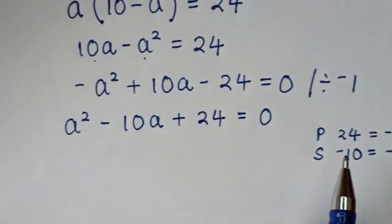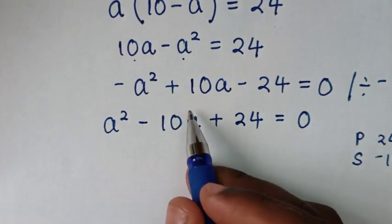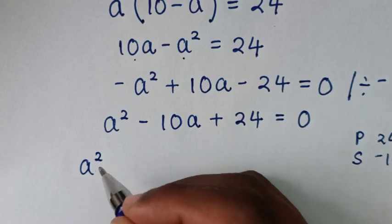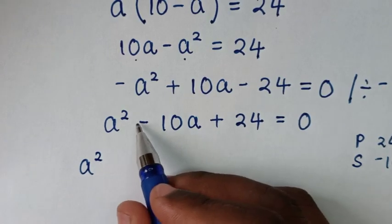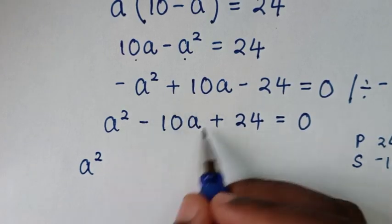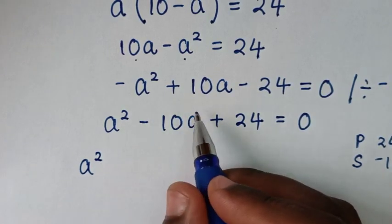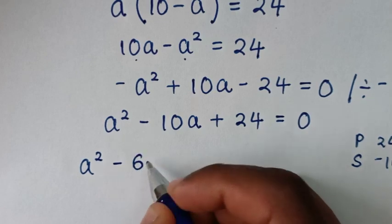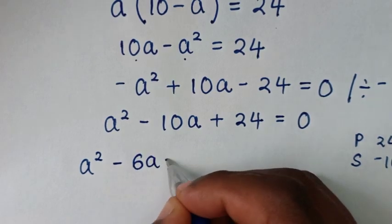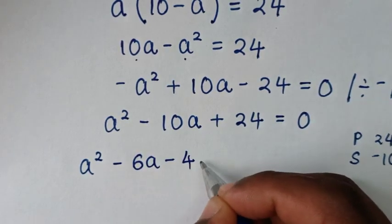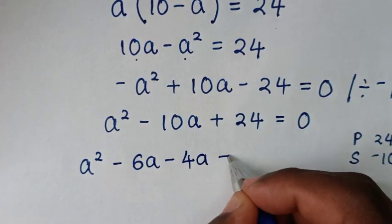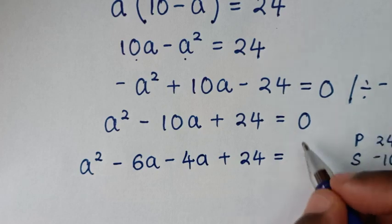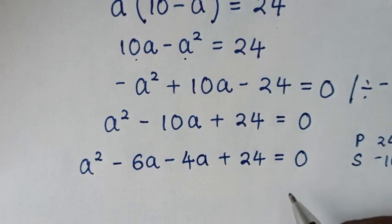Now we'll split the middle term. So it will be a squared, and from negative 10a we'll use the factors — so negative 10a is the same as negative 6a and negative 4a — then plus 24, is equal to 0.